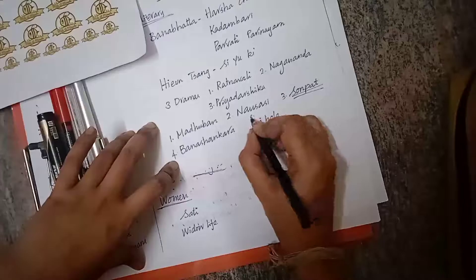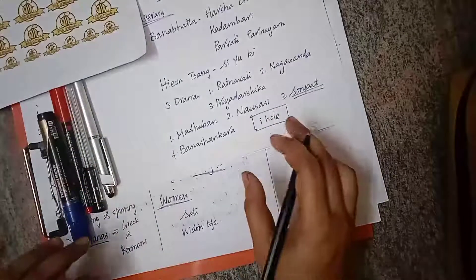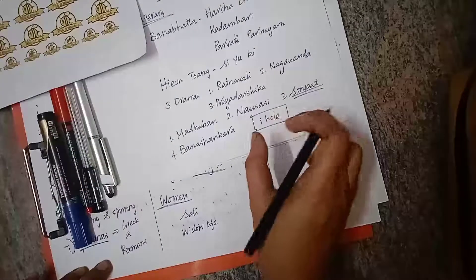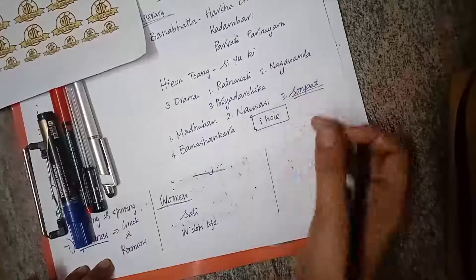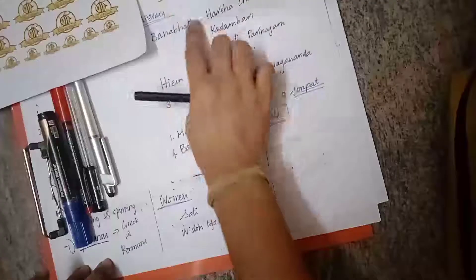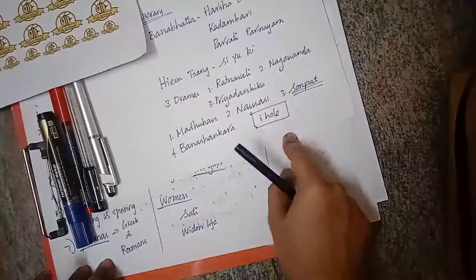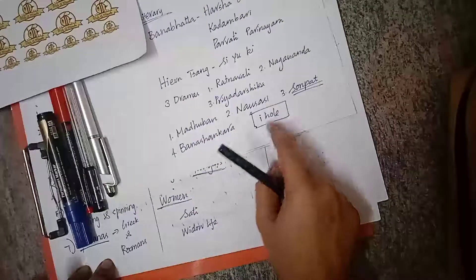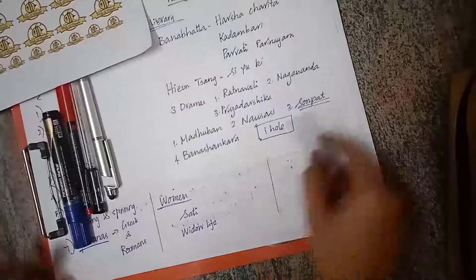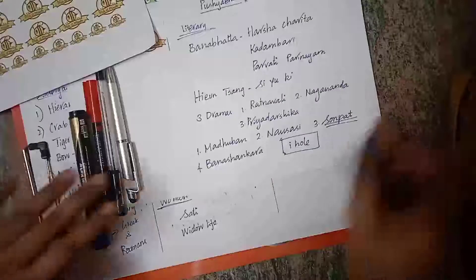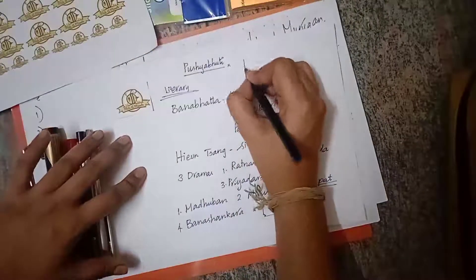The Aihole inscription is by Pulakeshin II. It tells that Pushyabuti king Harshavardhan was defeated by Pulakeshin II, who won the battle.